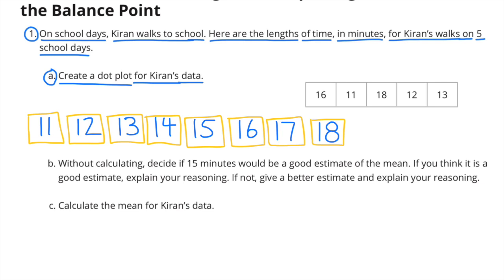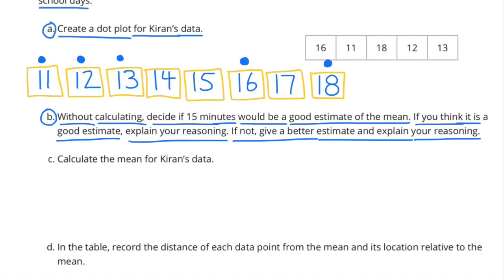Above the 11, 12, 13, 16, and 18, I placed a dot to represent Kieran's data. Part B: Without calculating, decide if 15 minutes would be a good estimate of the mean. If you think it is a good estimate, explain your reasoning. If not, give a better estimate and explain your reasoning.